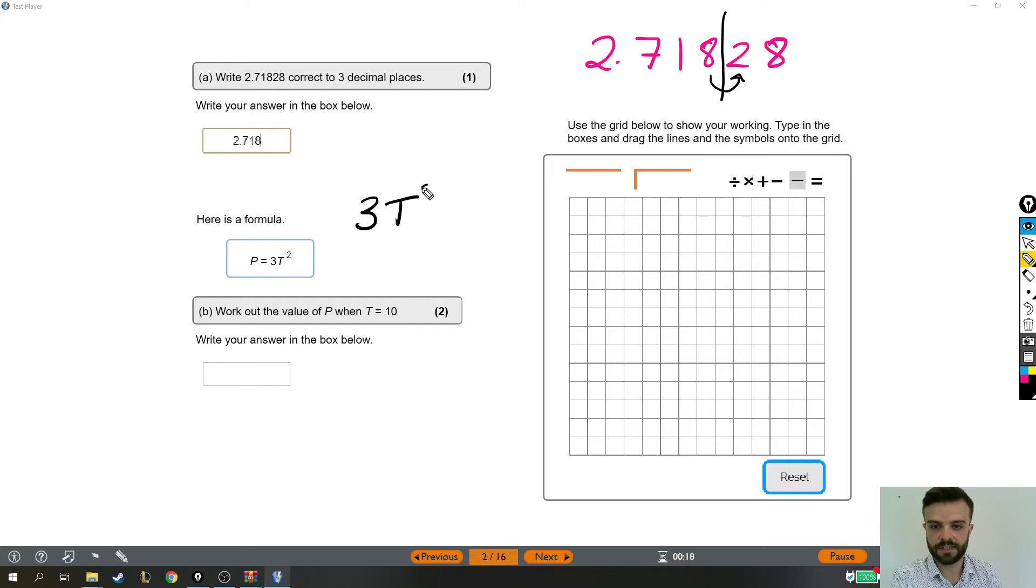When we have something like 3T squared, in algebra, which is what this is, it's letters and numbers, it's algebra, this means 3 times T squared. That's the first thing to bear in mind. It's a bit like if you have 2a. That's the same as having 2 times a, but in maths, we don't bother putting the times in there. We just call it 2a.